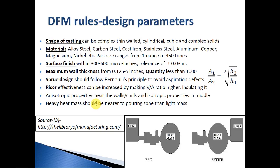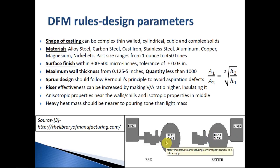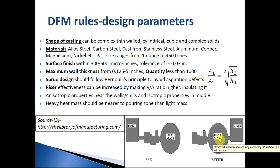Heavy heat masses must be located near the riser to avoid premature cooling. In a design where a lighter mass is fed first through the riser, premature cooling can occur and the heavier heat mass may not be fully filled. Therefore, the design in which the heavier heat mass is located closer to the riser is much better.